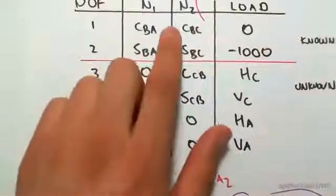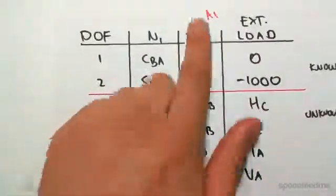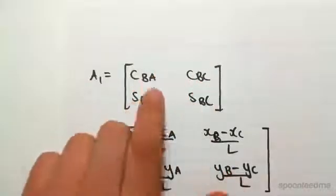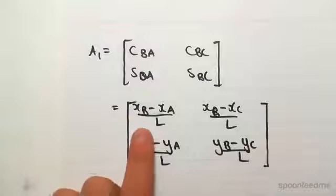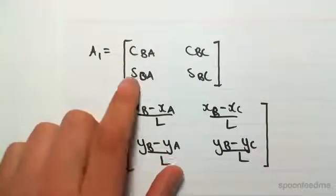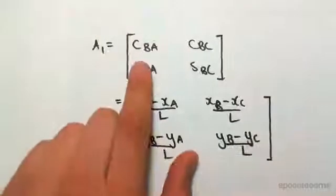So we're going to use that now to work out these matrices. I've just rewritten it out, so the A1 matrix would now be just these components there, which is over there. Now I'm going to write out—we're going to be using the formulas. So for cosines it's x's, for sines it's y's.